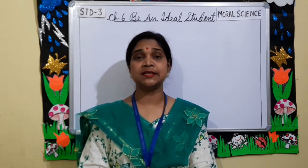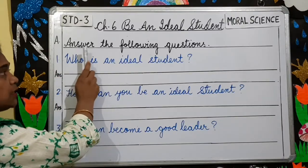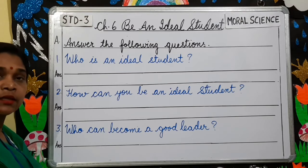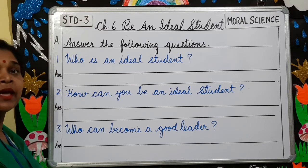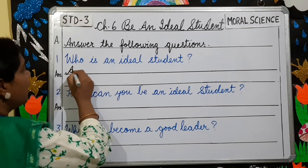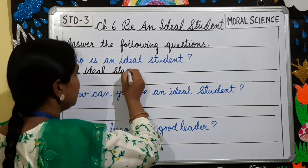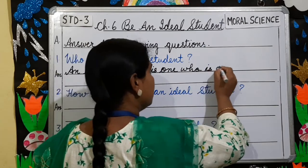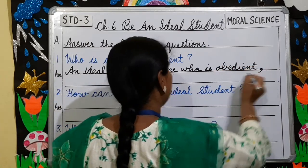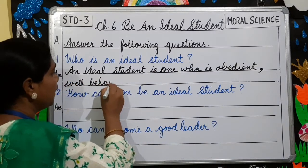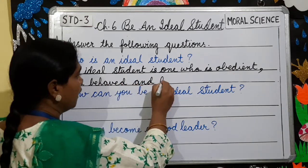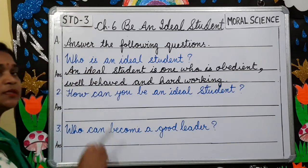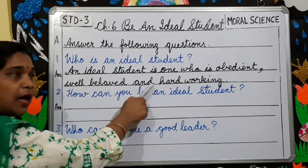Now we will move on with the exercises given in the book. Exercise A: Answer the following questions. Number 1: Who is an ideal student? An ideal student is one who is obedient, well behaved and hard working. Repeat the answer: An ideal student is one who is obedient, well behaved and hard working.